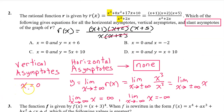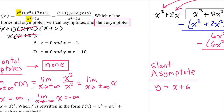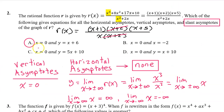Looking back over our work, we have found two asymptotes: a vertical asymptote x equals 0, and a slant asymptote y equals x plus 6. That's why the answer is A.